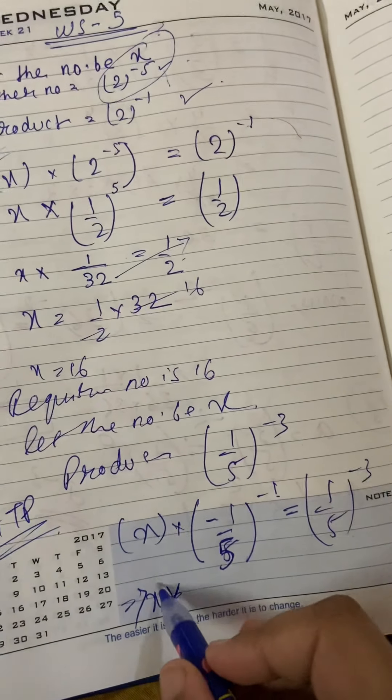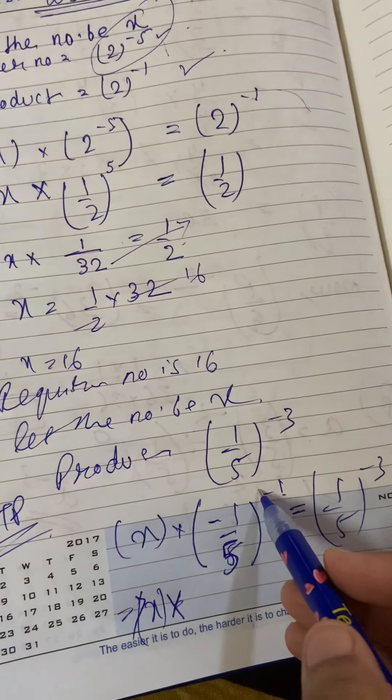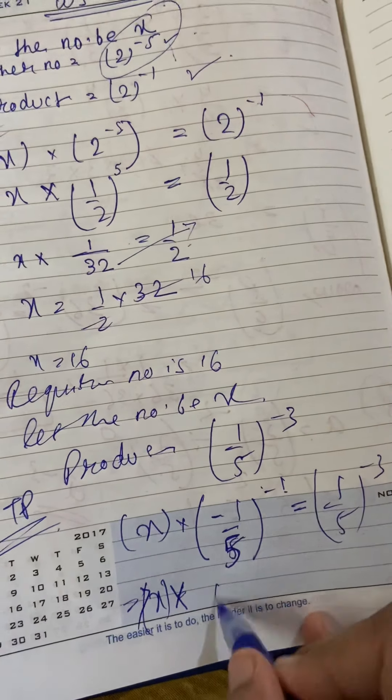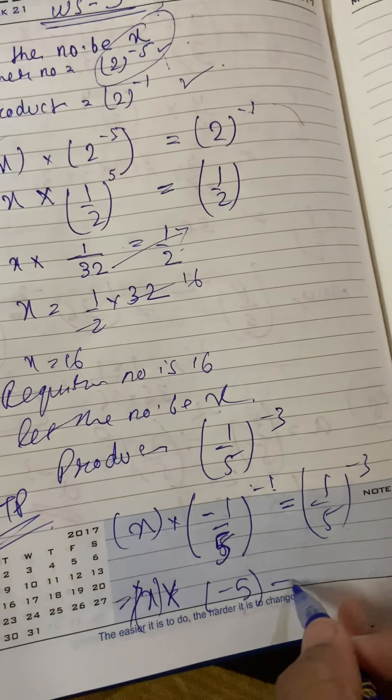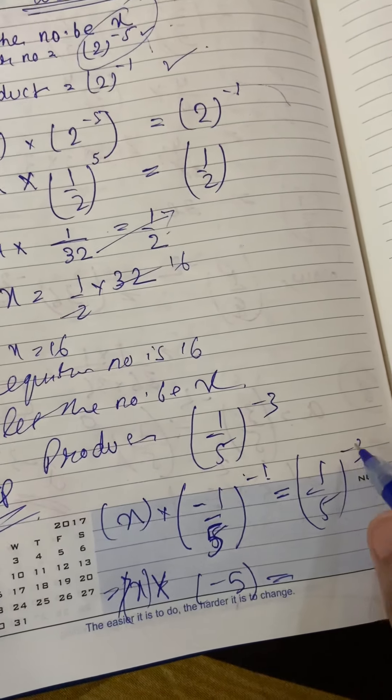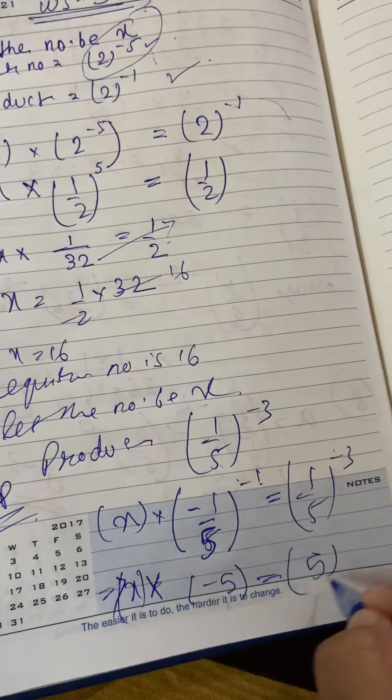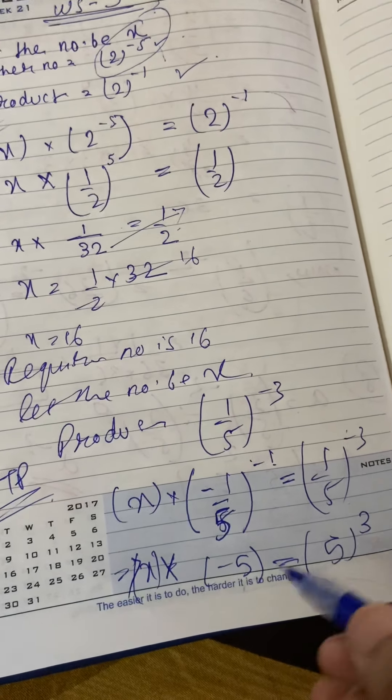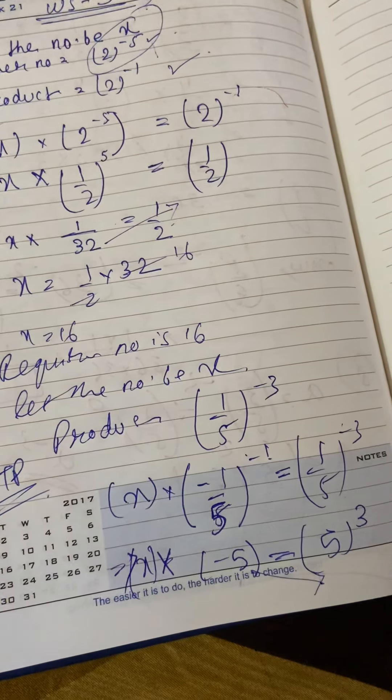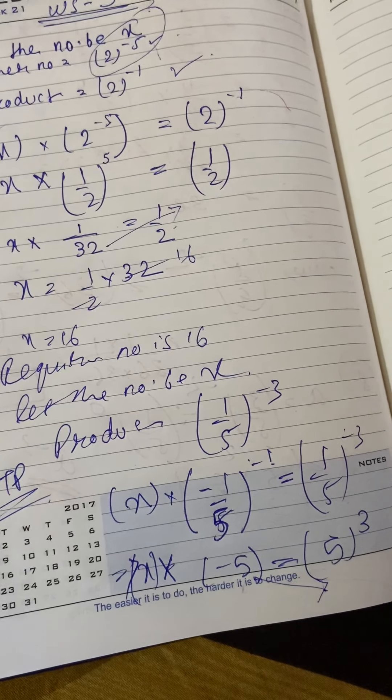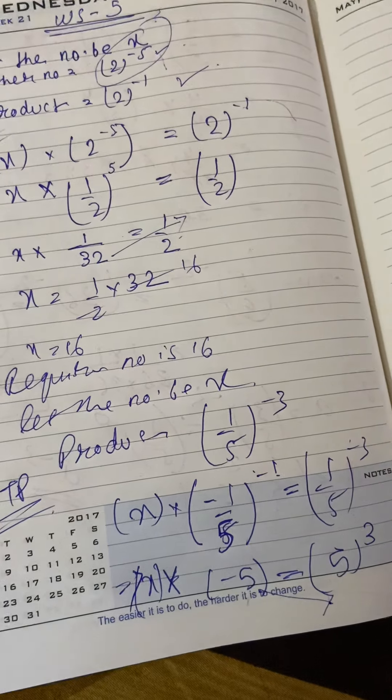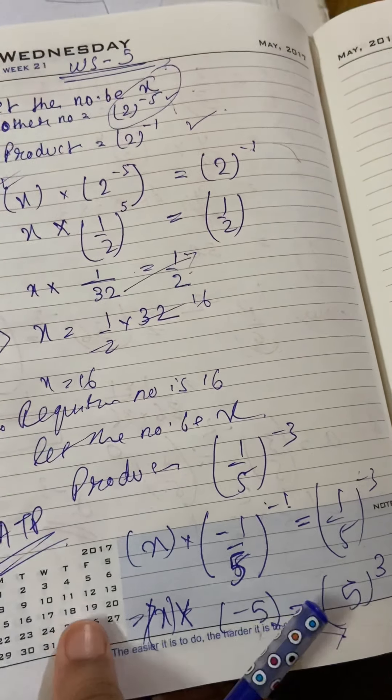Ab solve kaisi hooga? X into yhe minus hatana hai. To, iske badle hojaega minus 5. Equals to, yahaan bhi reciprocule karna hooga. To, 5 ka cube. Ab yhe minus 5 denominator mein jayega. Or 5 ka cube ke badle 125. Phir x ka value hajaega.